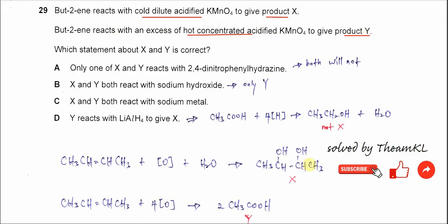So let's look at X and Y. What is the actual product? But-2-ene undergoes oxidation with cold dilute acidified KMnO4. This is the equation. It will form a diol. So this is the X that produces. Because this cis double bond will undergo oxidation. So one of the bonds will break and it will form a diol.